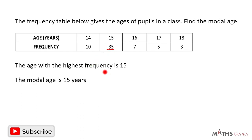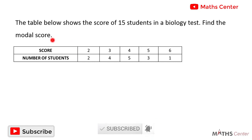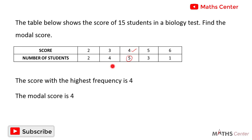Let's consider another question. The table below shows the scores of 15 students in a biology test — find the modal score. We have the scores and the number of students, which is the same as the frequencies. The modal score will be the score with the highest frequency. Looking through the frequencies, the highest frequency is 5, and the score that gives us 5 is 4. So the modal score is 4, because it is the score with the highest frequency.